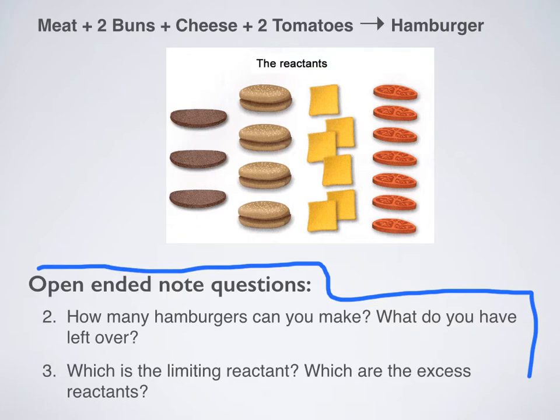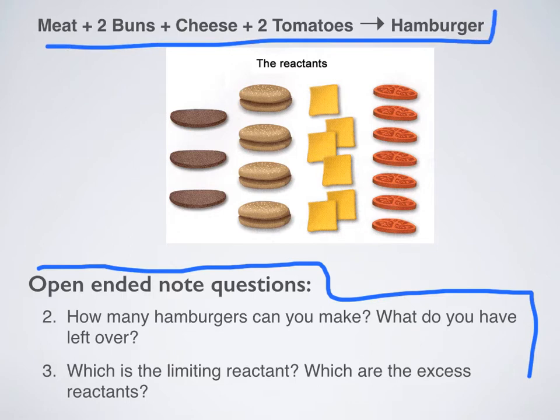So let's say this is my equation for making a hamburger. I've got meat, one piece of meat, plus two buns, plus cheese, plus two tomatoes. That's what makes one hamburger.